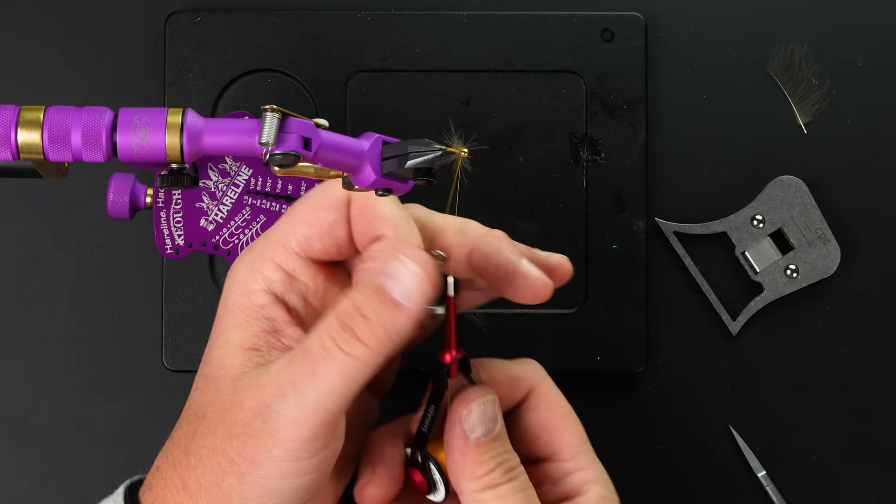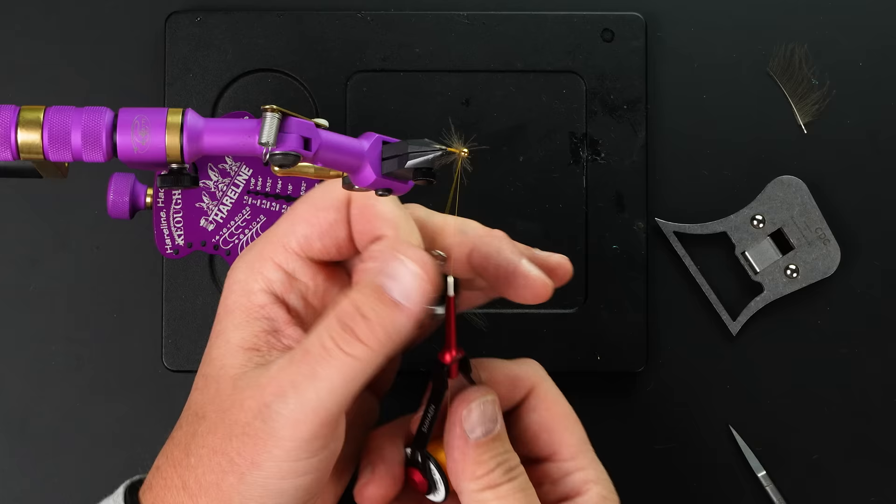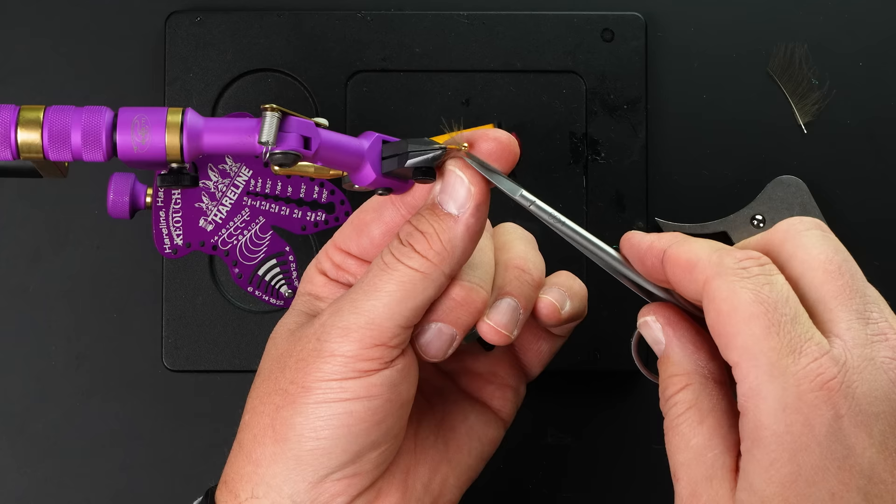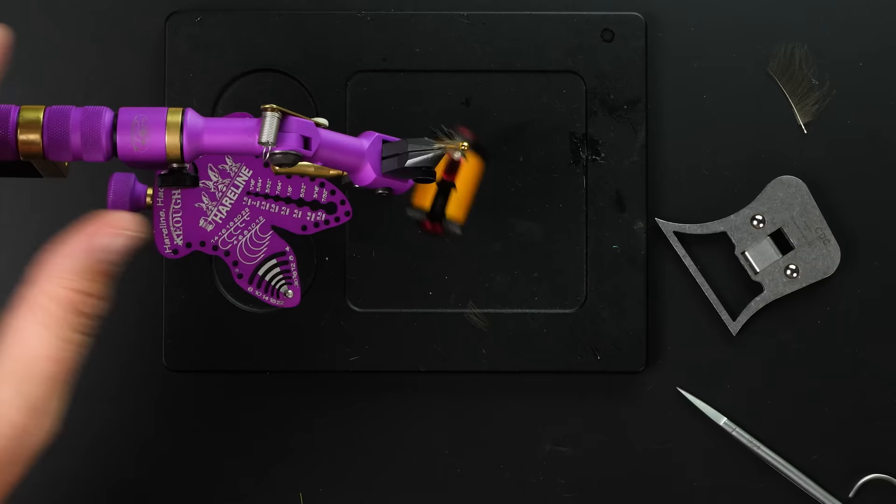So as you can see, that's just really sparse. You don't need much CDC at all for these Euros. And as you can see, it's going everywhere. That's fine. I'm just going to cross the bobbin and the thread twice. Get rid of the excess loop. Now I can pull all that back and with the Euro, you kind of want a little hot spot on the head anyway.